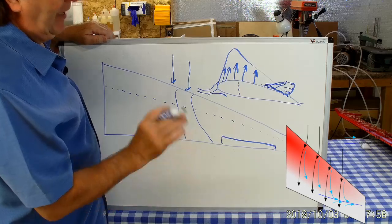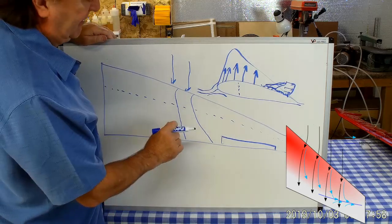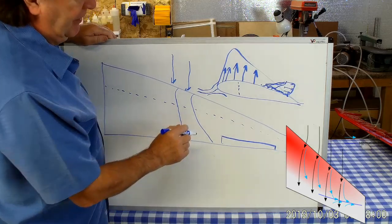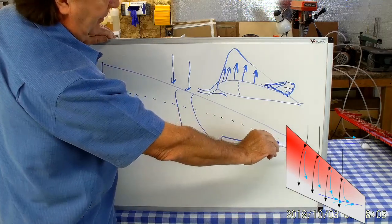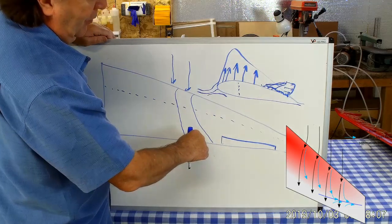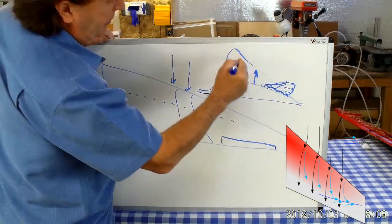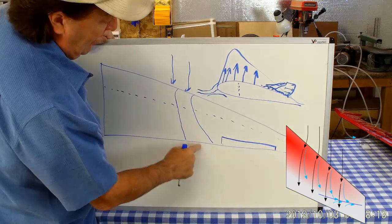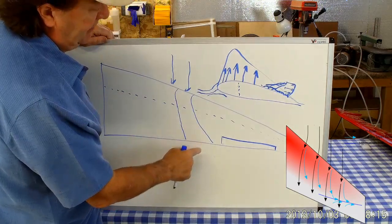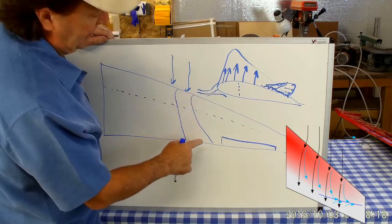And it really happens because it's much easier for those lazy air molecules to go run for the wing tip rather than going back along the wing.